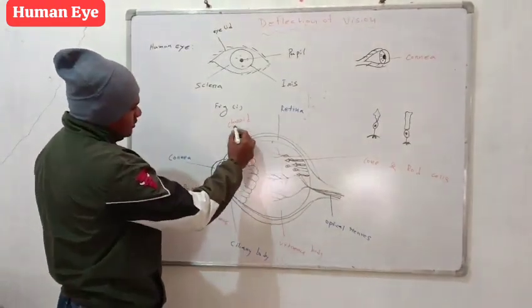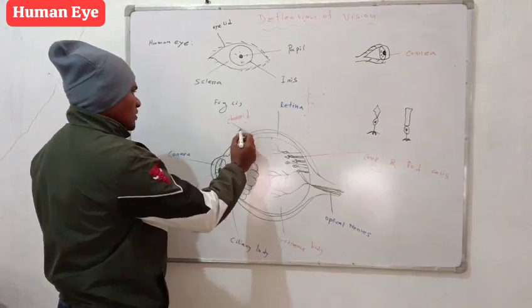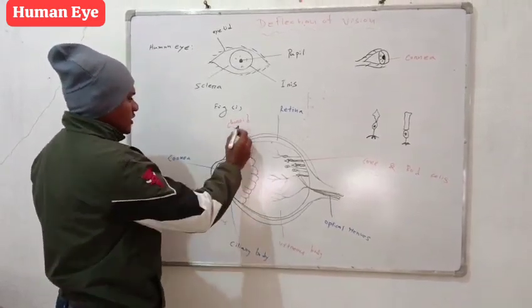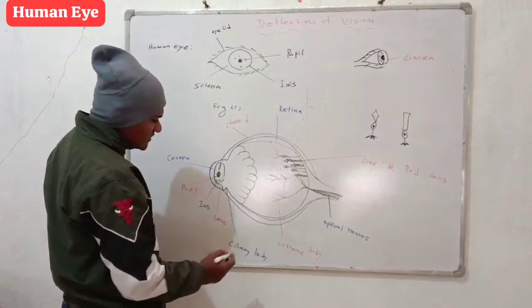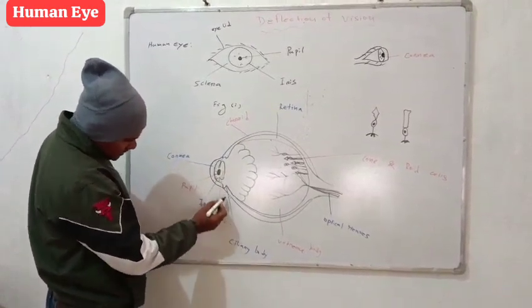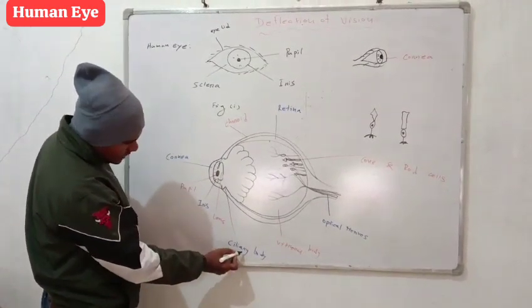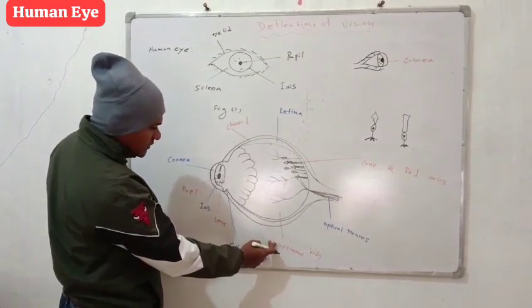This part is called cornea. Sorry, retina. And this is our ciliary body. This part is vitreous body.